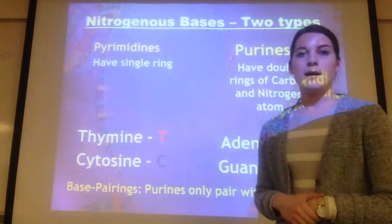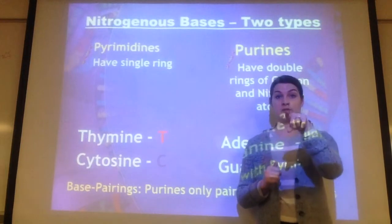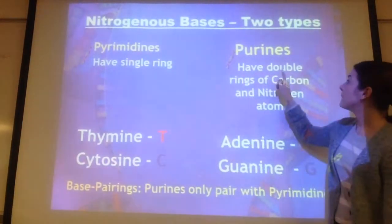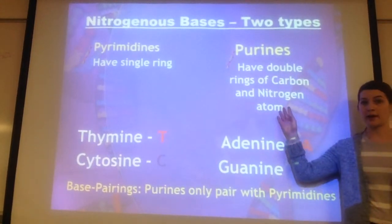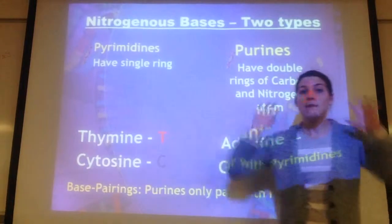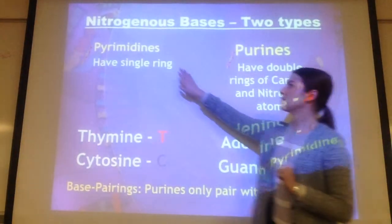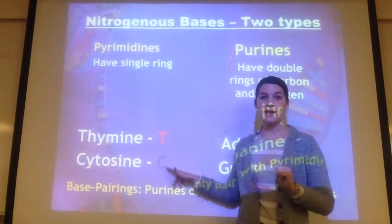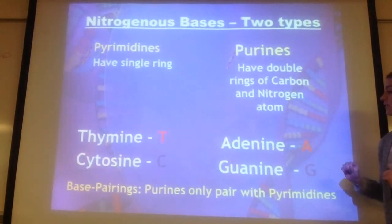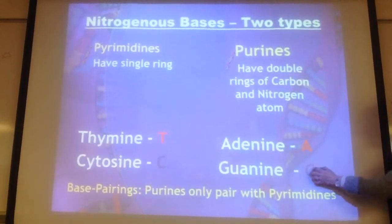There are two different types of bases: pyrimidines and purines. Pyrimidines are made up of a single ring — just one small ring. Purines are a double ring. So pyrimidines are a single ring, purines are a double ring — come up with a little saying to remember that so you don't mix them up. The pyrimidines with a single ring are thymine and cytosine. The purines, which are bigger with a double ring, are adenine and guanine.